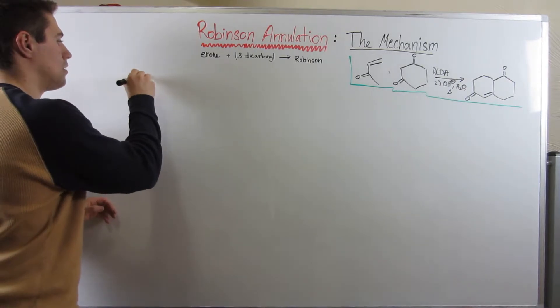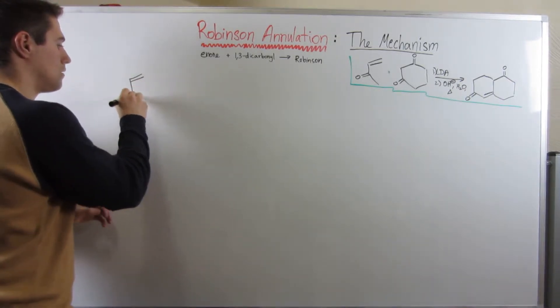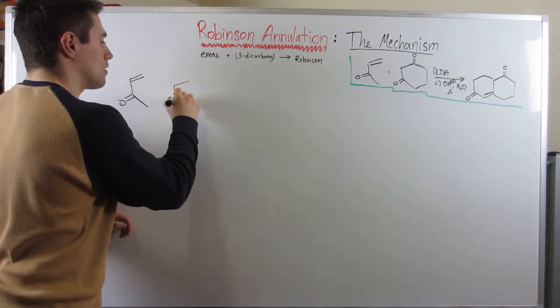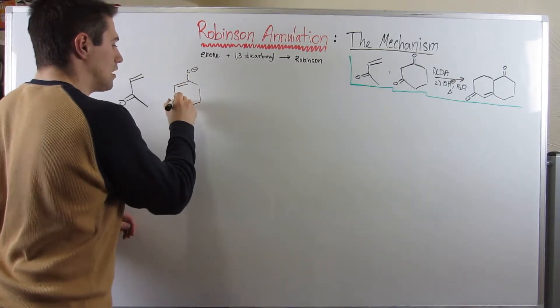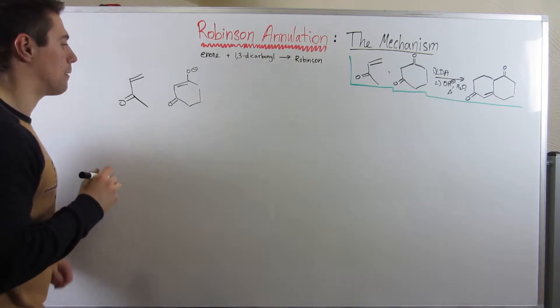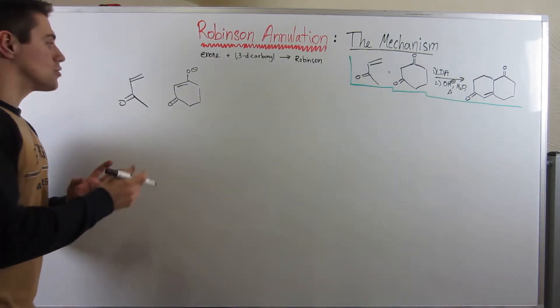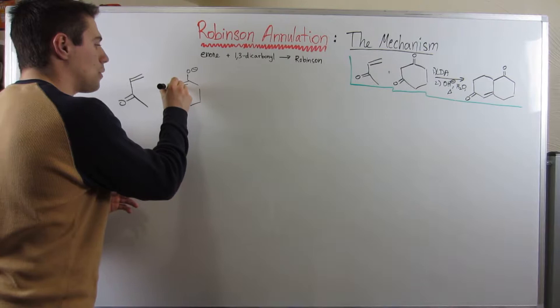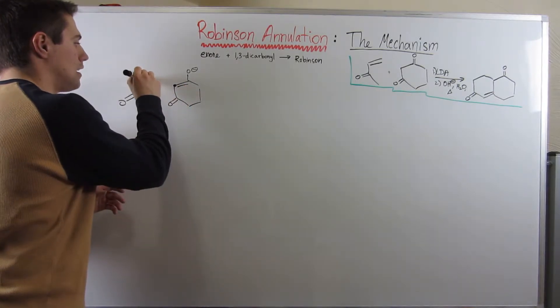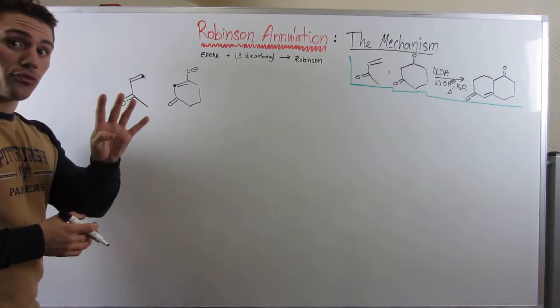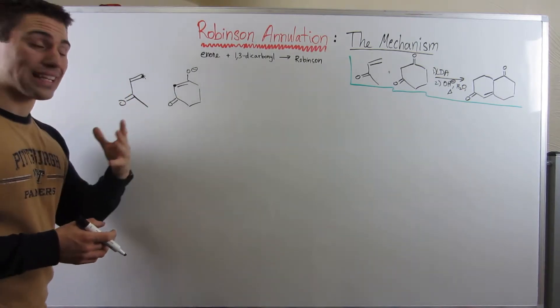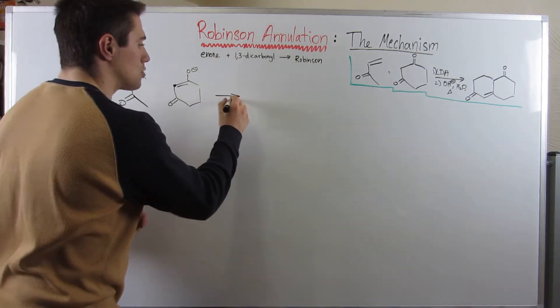Here's my enone. Here is now the enolate we both agreed on. We need to do a Michael addition. We're going to attack with this dotted alpha carbon and we're going to attack this asterisk carbon in the enone, the carbon that is given the number four in that system. So I'm going to draw the mechanism.